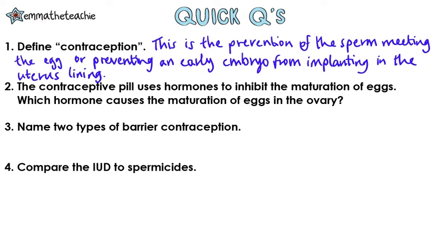Question 2: The contraceptive pill uses hormones to inhibit the maturation of eggs. Which hormone causes the maturation of eggs in the ovary? FSH.